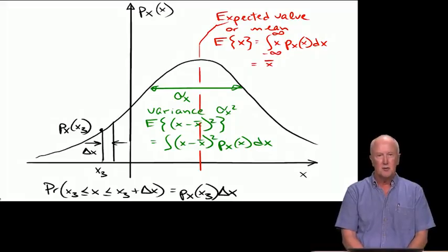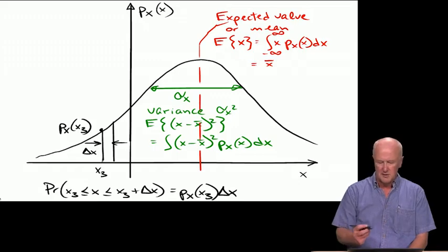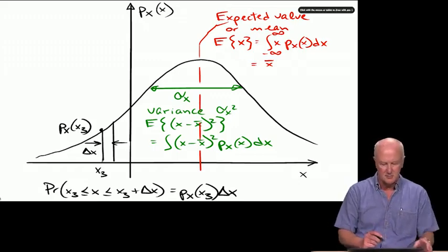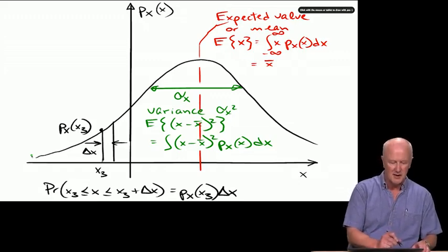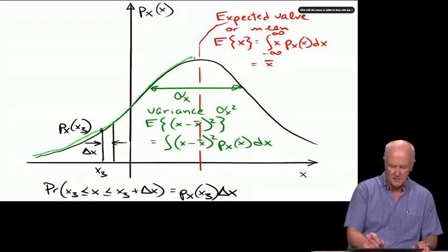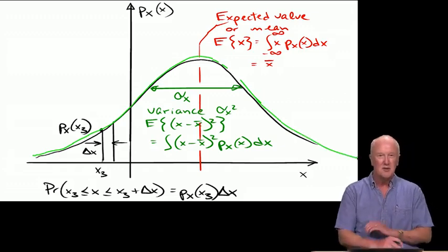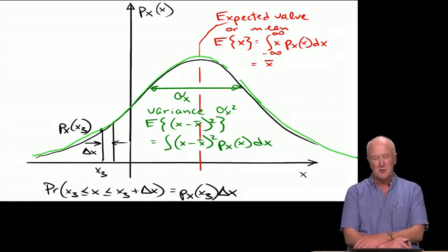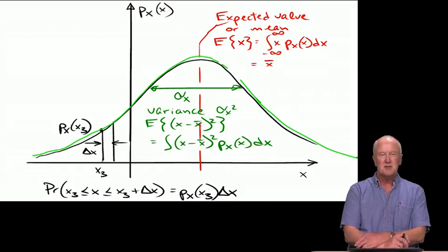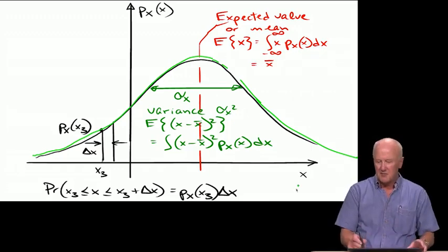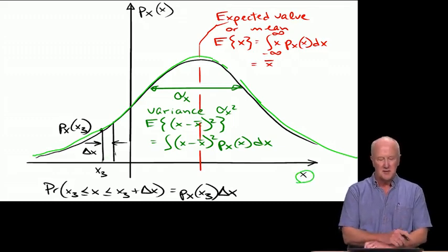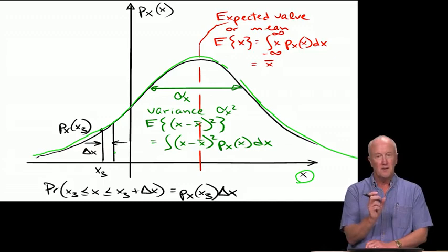So it takes something that describes how good the measurement is and tells you how good the quality of the end product, the position fix, is. To do this, we'll need to invoke a little bit of theory from probability. And what you see in front of you there, the black curve, is the so-called probability density function. And so the PDF, the abbreviation that we use, is this curve right here. And so I've tried to give it the shape of a traditional bell curve, or Gaussian curve, or normal curve.